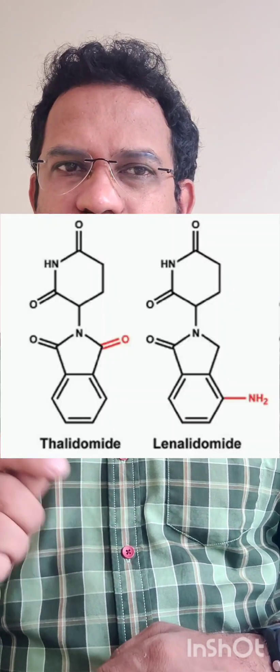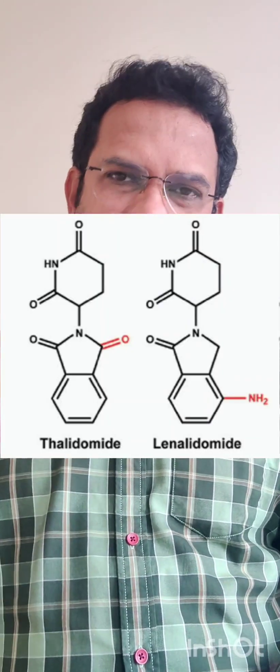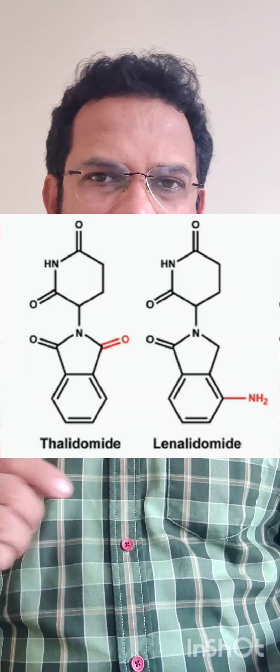Option D: lenalidomide is an immunomodulatory derivative of thalidomide. Looking at the structure of lenalidomide, it is structurally very similar to thalidomide. It has similar actions to thalidomide but also has hematological side effects. It is a derivative of thalidomide currently being investigated to treat various diseases.